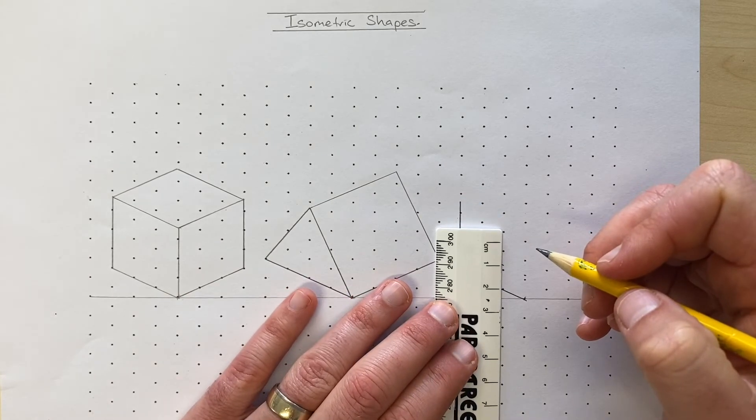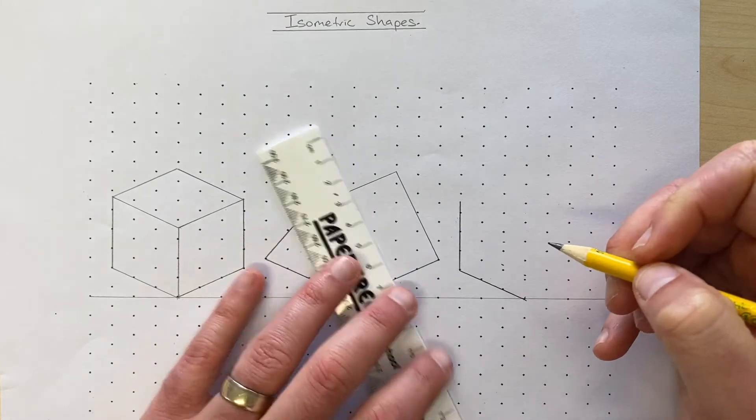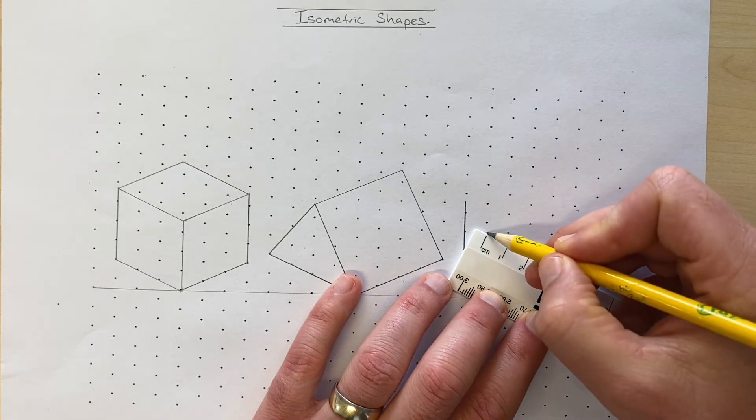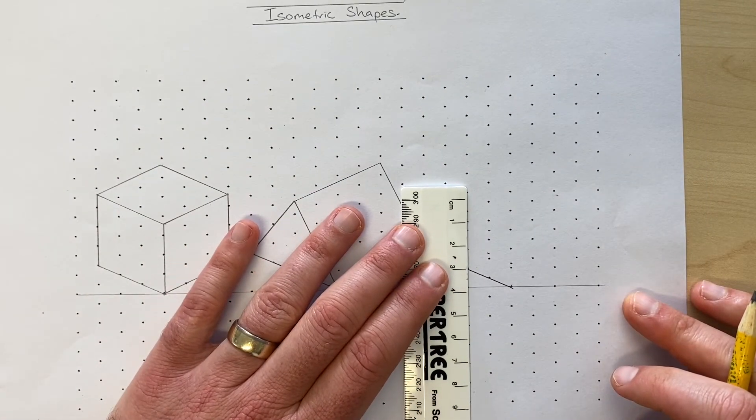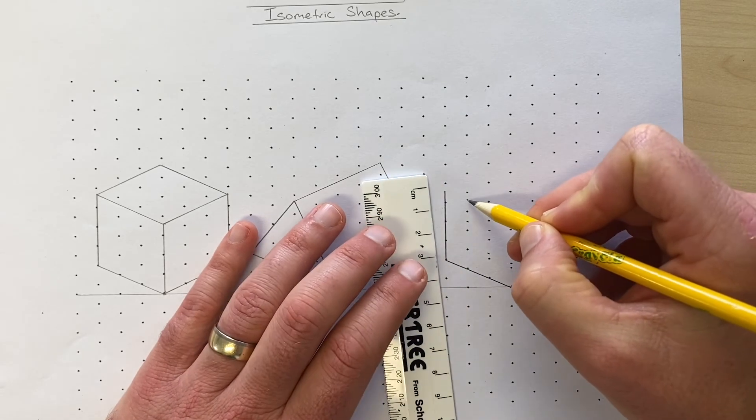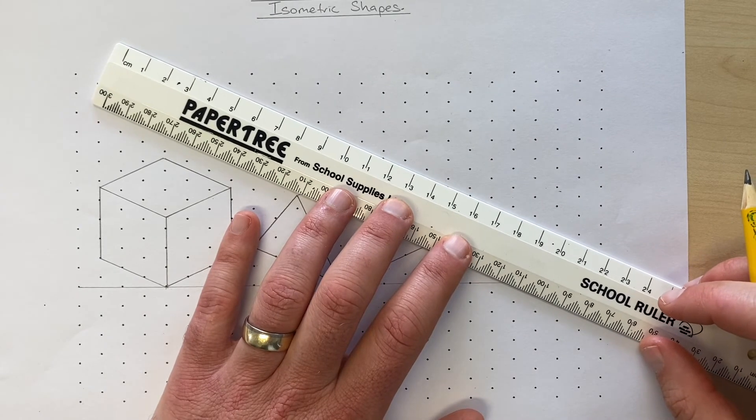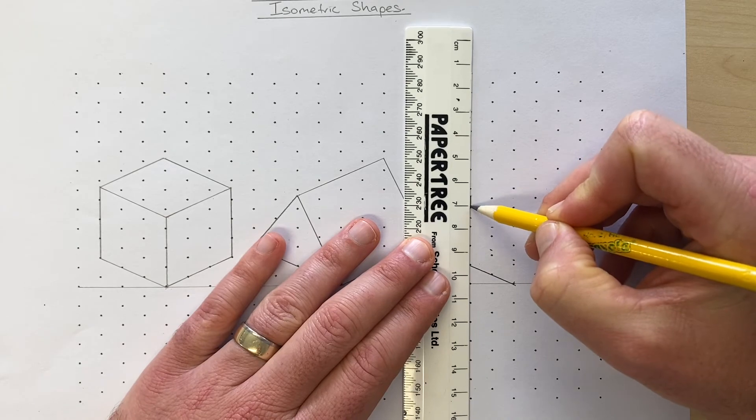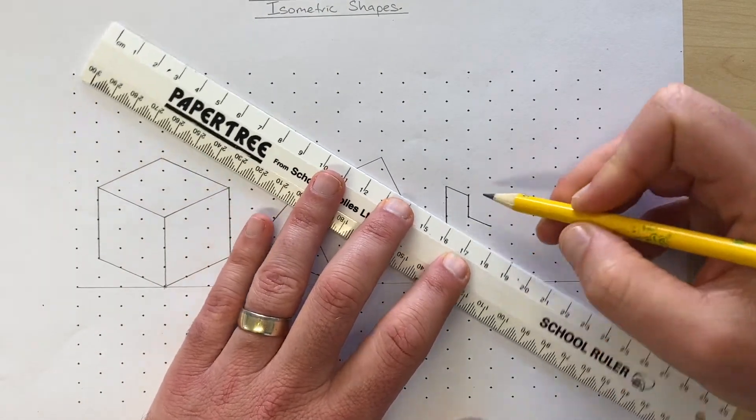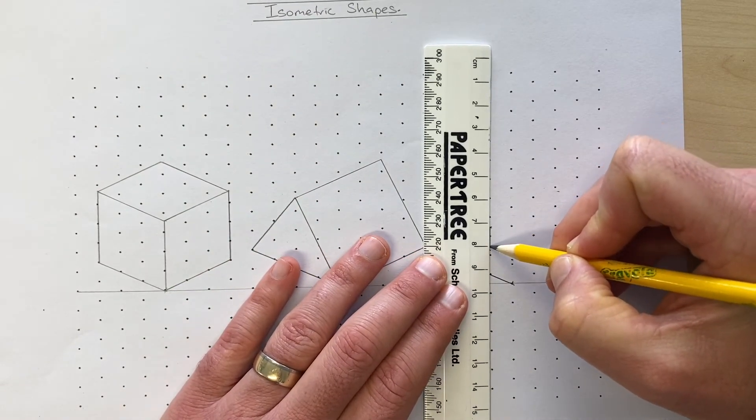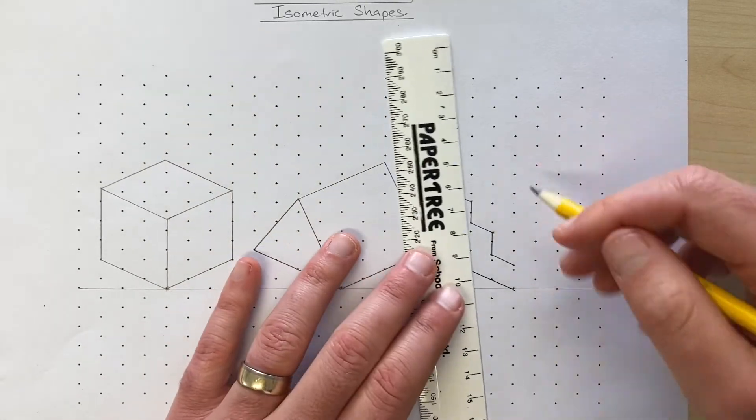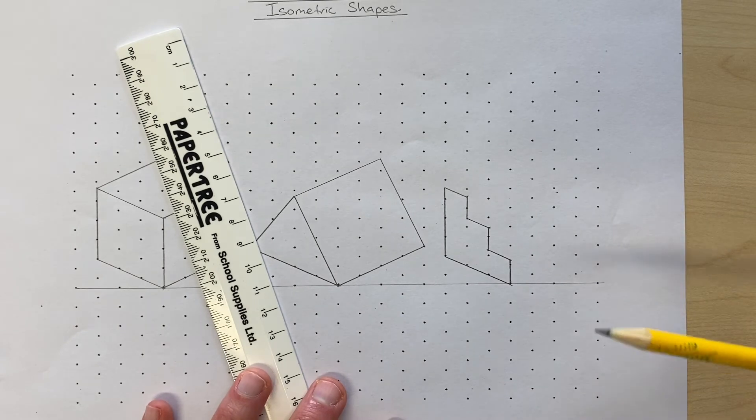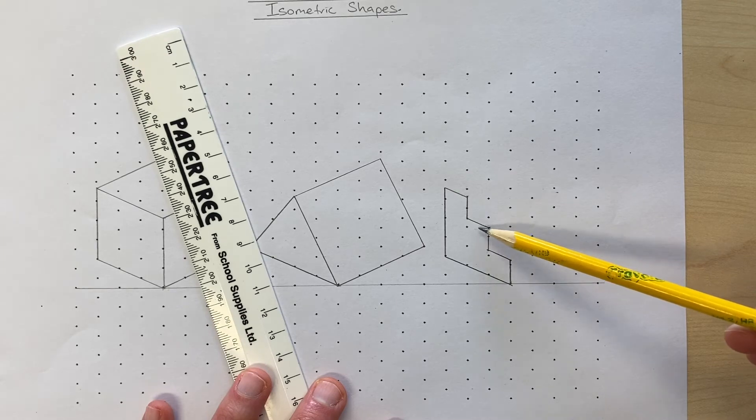Then it needs to go up one centimeter again. And then it needs to come across one centimeter. And then, hopefully, if we go up one centimeter, that mark there will be in line if we hold it up there. And then we can just join those dots up one, two, three, four, five, six. And that is the rise and the run. You remember, we discussed the rise and the run previously of stairs. That's the rise one centimeter and the run is one centimeter. Rise, run, rise, run.